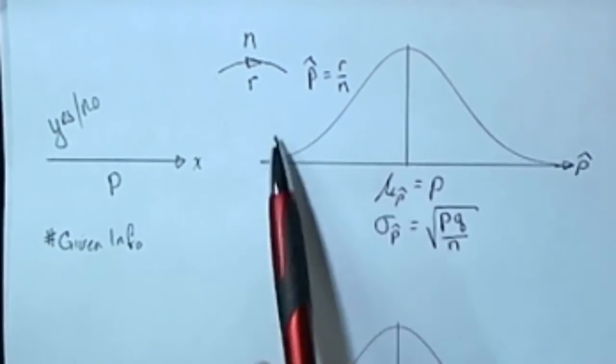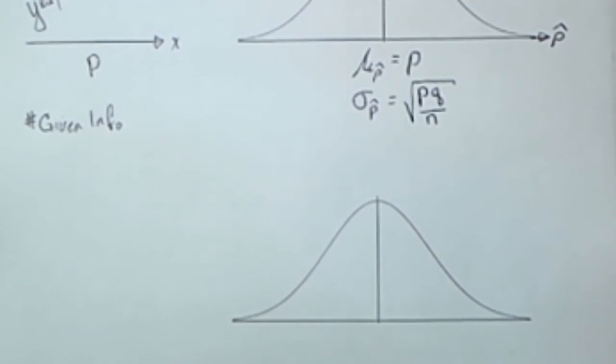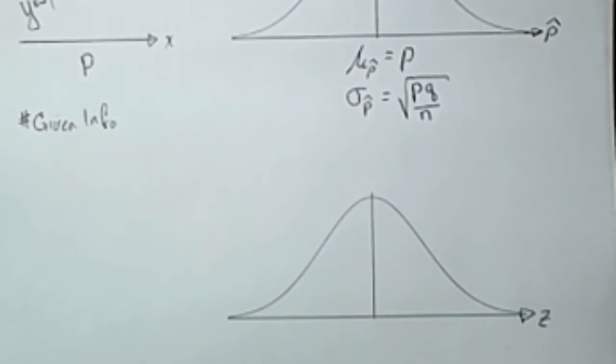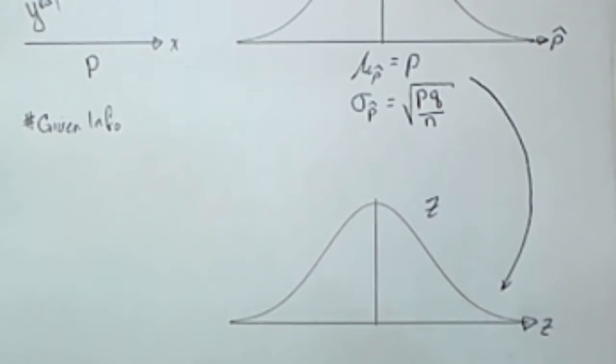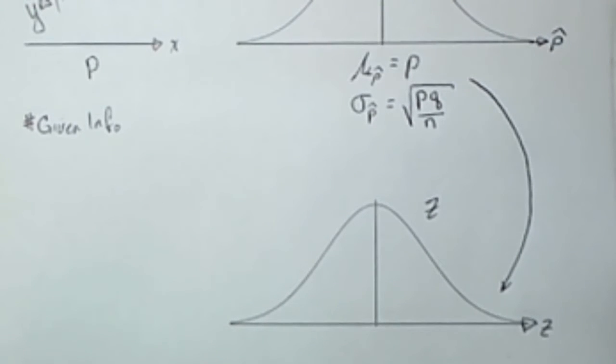Since this is a normal distribution it can be converted to a standard normal distribution. These can be converted to Z scores and Z scores are always calculated the same way.